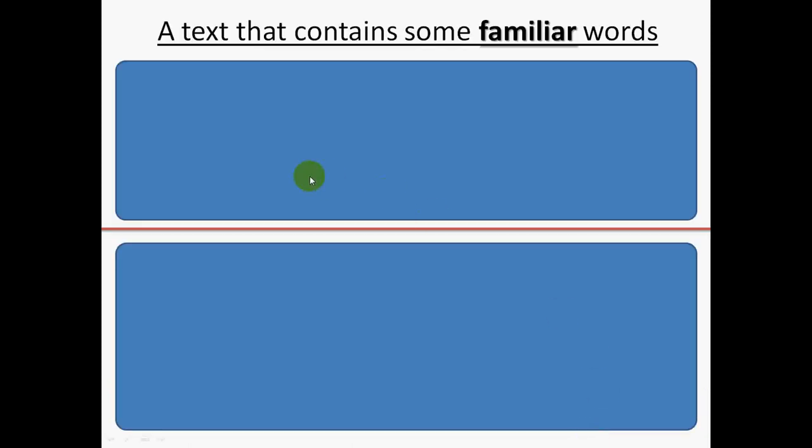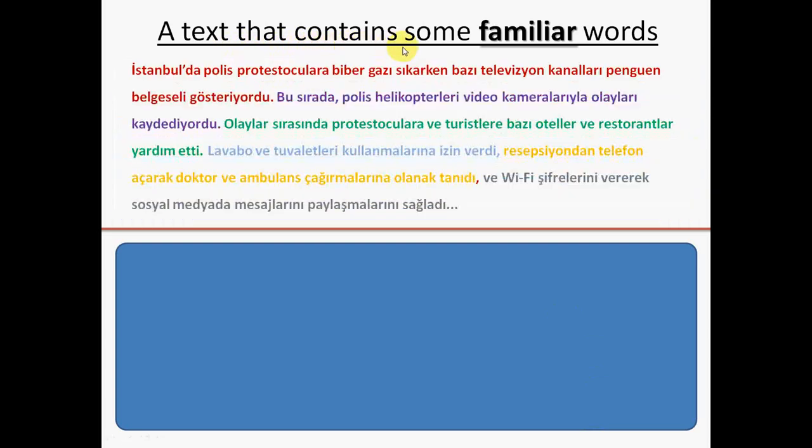Now, let me show you a fictionalized text in Turkish that contains many familiar words. I will read the text for you. While following, try to catch the familiar words. Istanbul'da polis protestoculara biber gazı sıkarken bazı televizyon kanalları Penguin belgeseli gösteriyordu. Bu sırada polis helikopterleri video kameralarıyla olayları kaydediyordu. Olaylar sırasında protestoculara ve turistlere bazı oteller ve restorantlar yardım etti. Lavabo ve tuvaletleri kullanmalarına izin verdi. Resepsiyondan telefon açarak doktor ve ambulans çağırmalarına olanak tanıdı. Ve wifi şifrelerini vererek sosyal medyada mesajlarını paylaşmalarını sağladı.